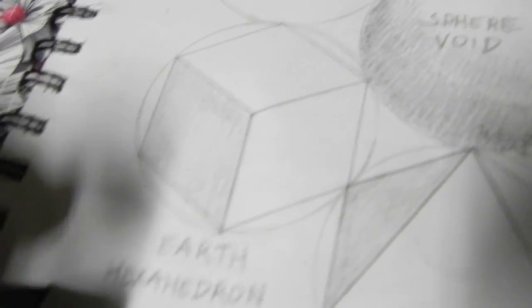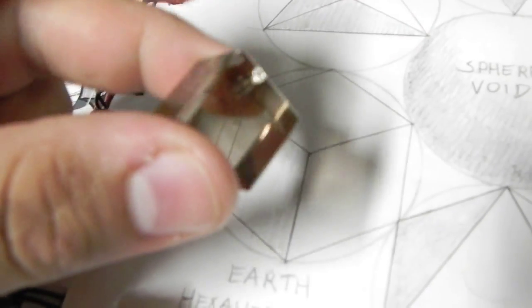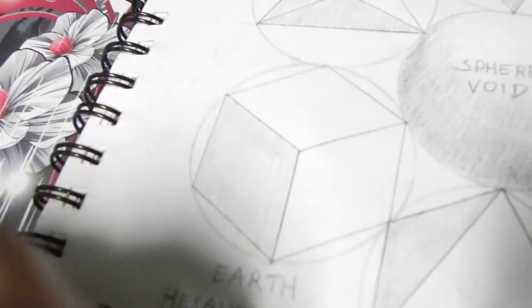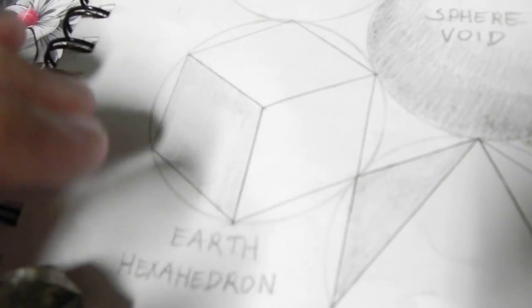Next I want to talk about is the earth hexahedron or the cube. This guy. And this solid represents earth.